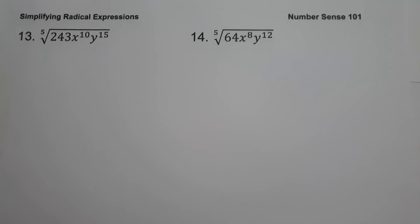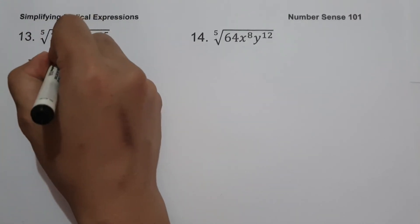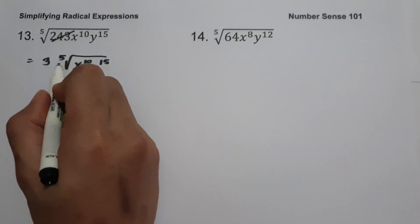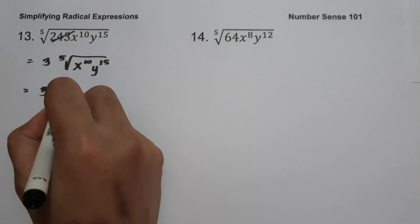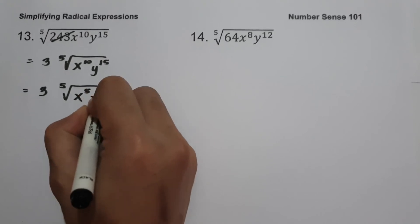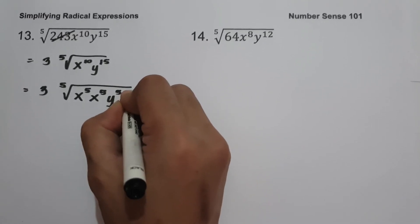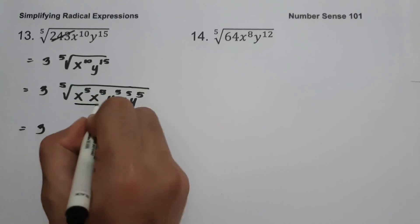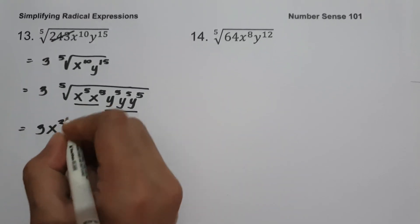On example number 13, we have fifth root of 243x raised to 10, y raised to 15. To simplify, the fifth root of 243 is 3. Since our index is 5 we divide the exponents of x and y by 5. For x raised to 10: x to the 5th twice — total is 10. For y raised to 15: y to the 5th three times — total is 15. We have 2 x-to-the-5th terms giving x squared, and 3 y-to-the-5th terms giving y cubed. So our answer is 3x squared y cubed.